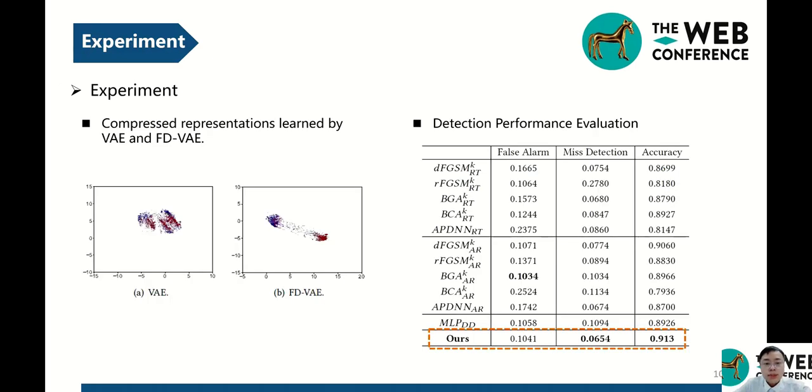In order to verify the robustness of our model, we did a lot of experiments on the above dataset, as shown in picture left. We show the latent vectors learned by VAE and FDVAE. In both figures, the blue points correspond to benign examples, and the red ones represent the malicious examples. Obviously, our model succeeds in disentangling the features. Then we evaluate our method in the scenario where no adversarial example exists. As shown in the table, our model outperforms all the other models in terms of misdetection rate and accuracy.